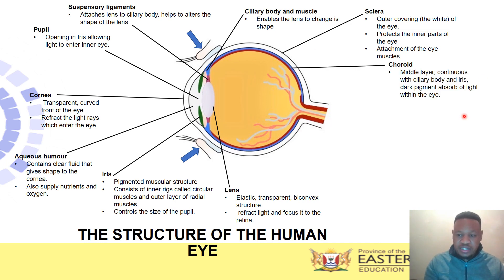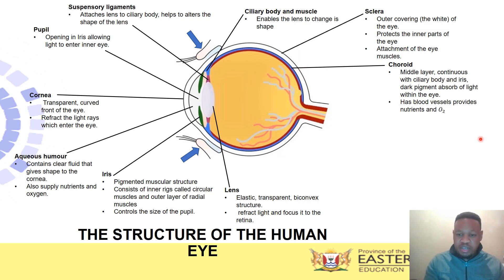Moving on to the middle layer of the eye — the choroid. This is the mid-layer from which the ciliary muscle, suspensory ligaments, and iris all arise. The choroid is a dark pigmented layer — some textbooks say it is brown — and its dark pigment helps to absorb light. As light is refracted and passes through, the choroid absorbs stray light so it won't scatter inside the eye, keeping the light focused to where the image will form.